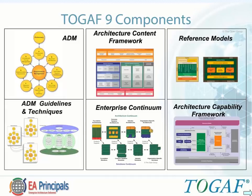These are the TOGAF 9 components. The Architecture Development Method is an iterative sequence of steps to develop an enterprise-wide architecture. The ADM Guidelines and Techniques, the Architecture Content Framework, the TOGAF Reference Models — including the Technical Reference Model and the Integrated Information Infrastructure Reference Model (I3RM) supporting boundaryless information flow — and the Enterprise Continuum, a virtual repository of architecture assets from which assets are created, drawn, modified, and returned during application of the ADM.